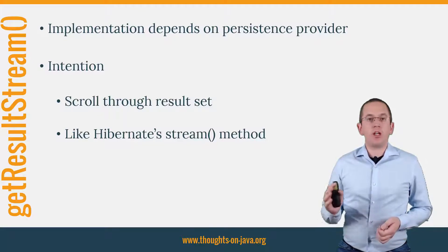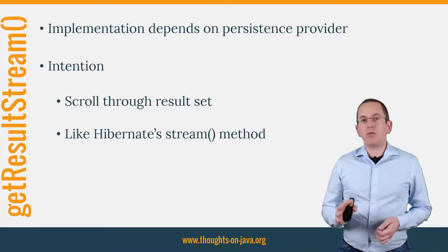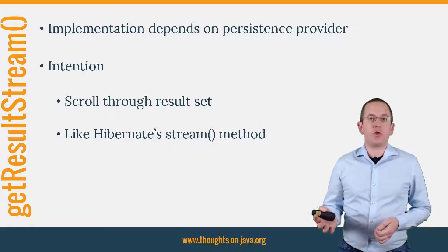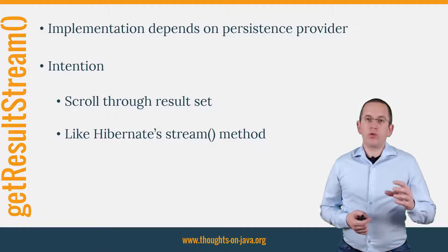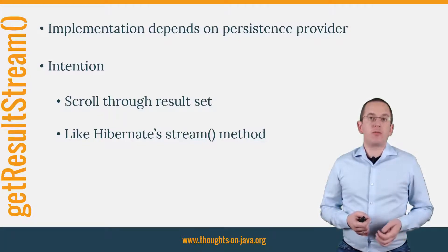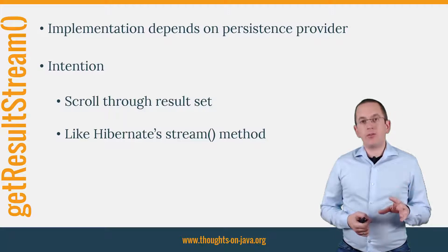It's to be expected that most JPA implementations provide their own implementation of the getResultStream method. Hibernate, for example, introduced its stream method in version 5.2 and I would be surprised if they don't reuse it for JPA's getResultStream method. It uses Hibernate's scrollable result implementation to move through the result set and to fetch the records in batches. That prevents you from loading all records of the result set at once and allows you to process them more efficiently.